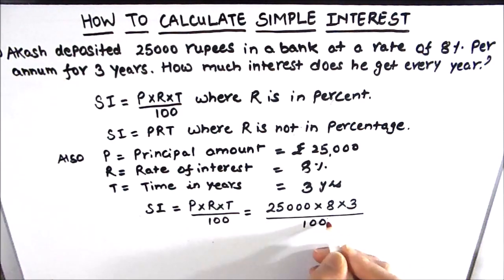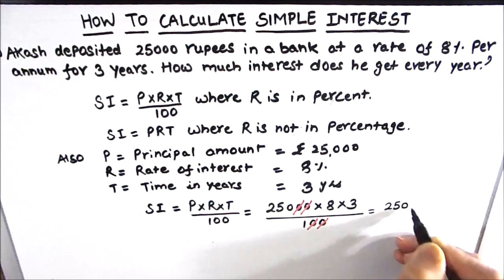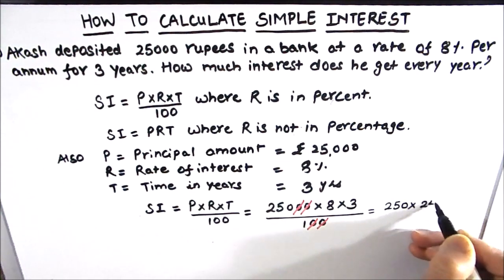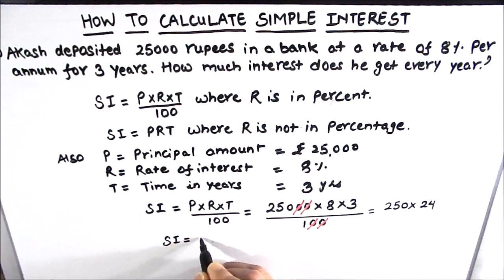Let's simplify it. These two zeros get cancelled with the zeros in the numerator. So now we have 250 times 8 times 3 is 24. 250 times 24 is 6,000. So our simple interest is rupees 6,000.